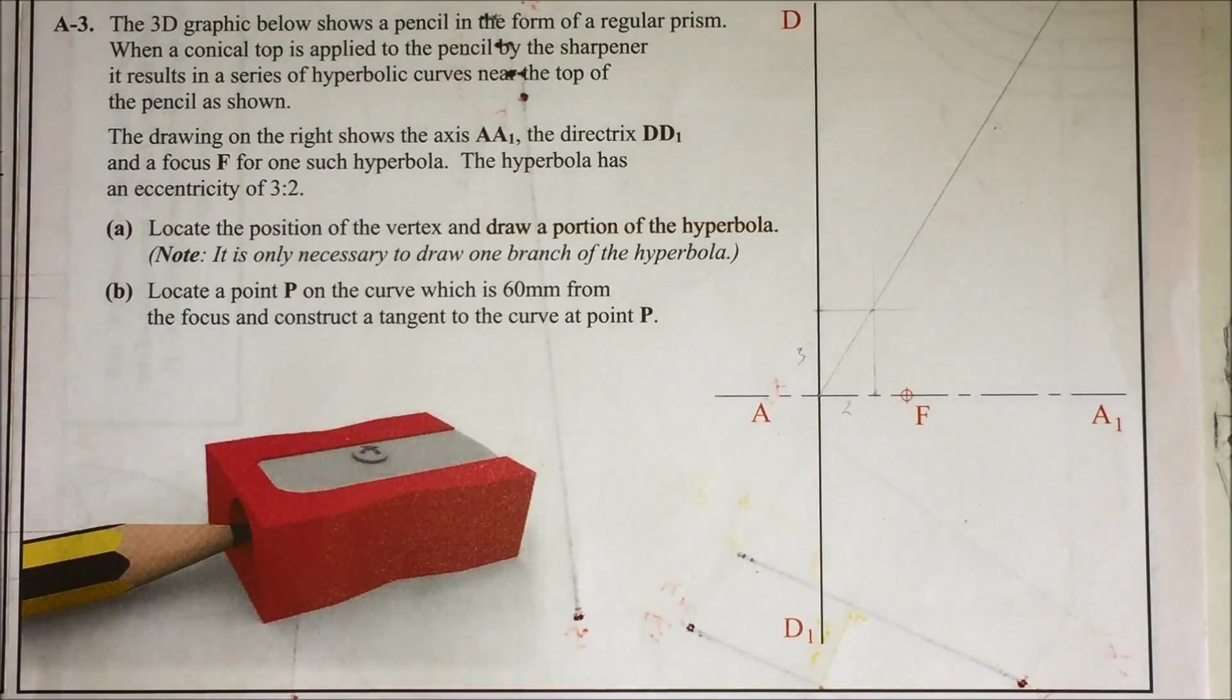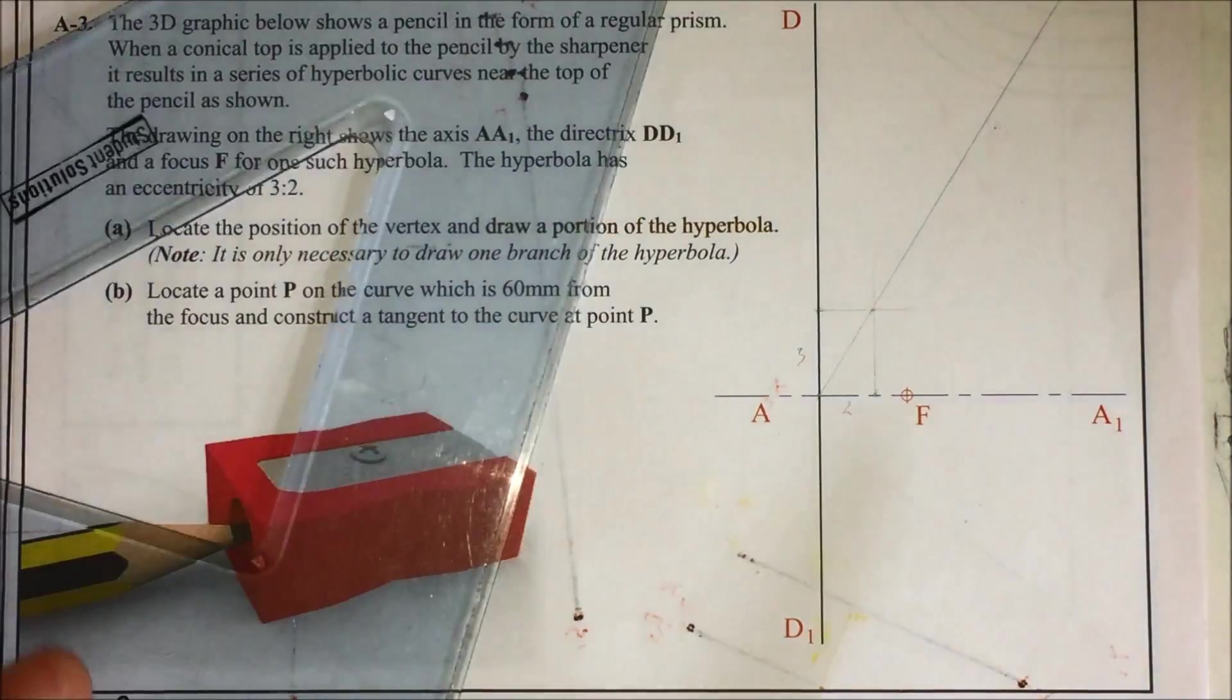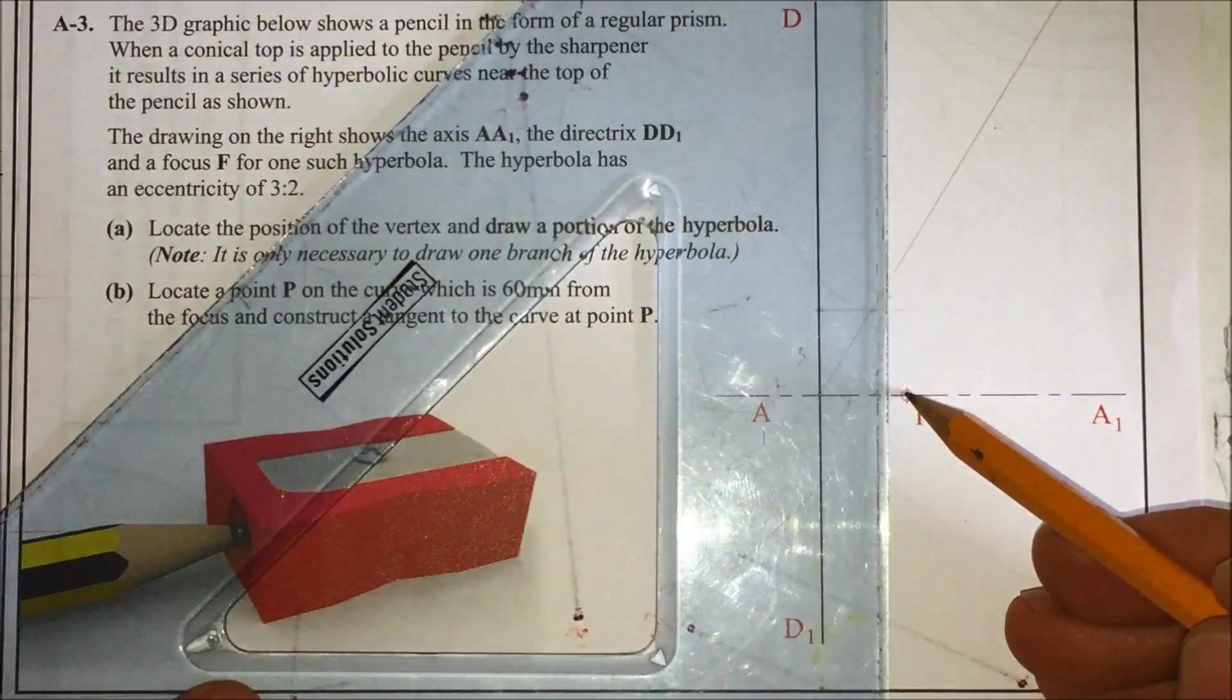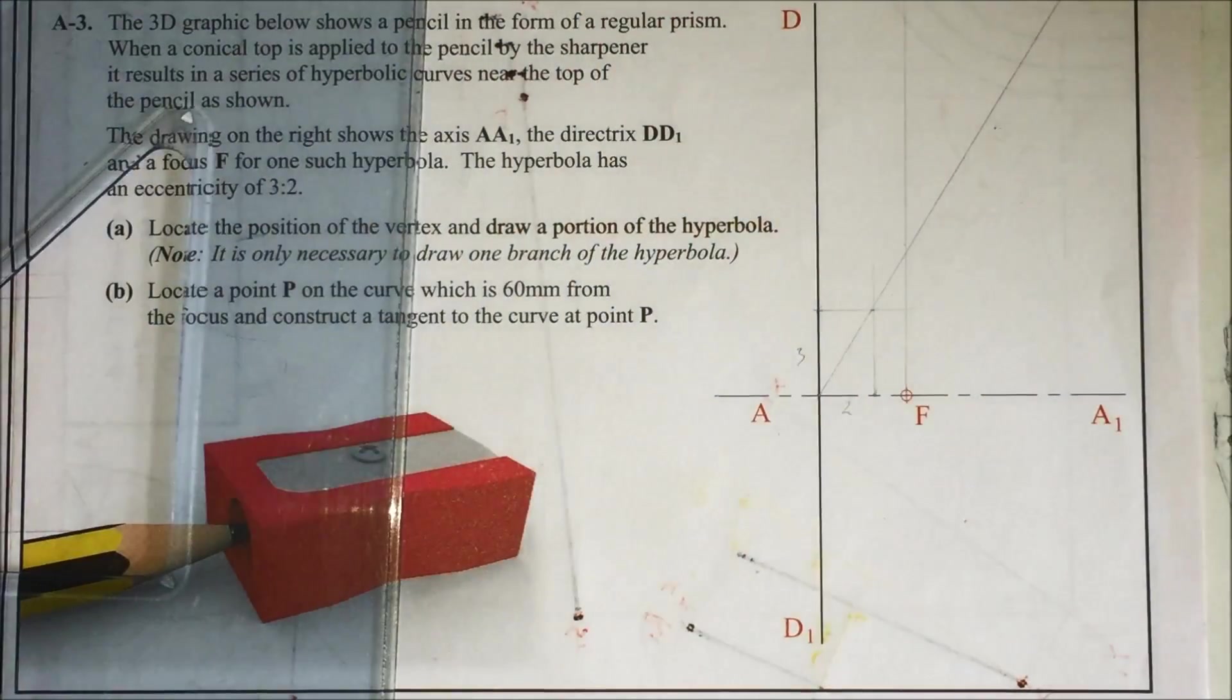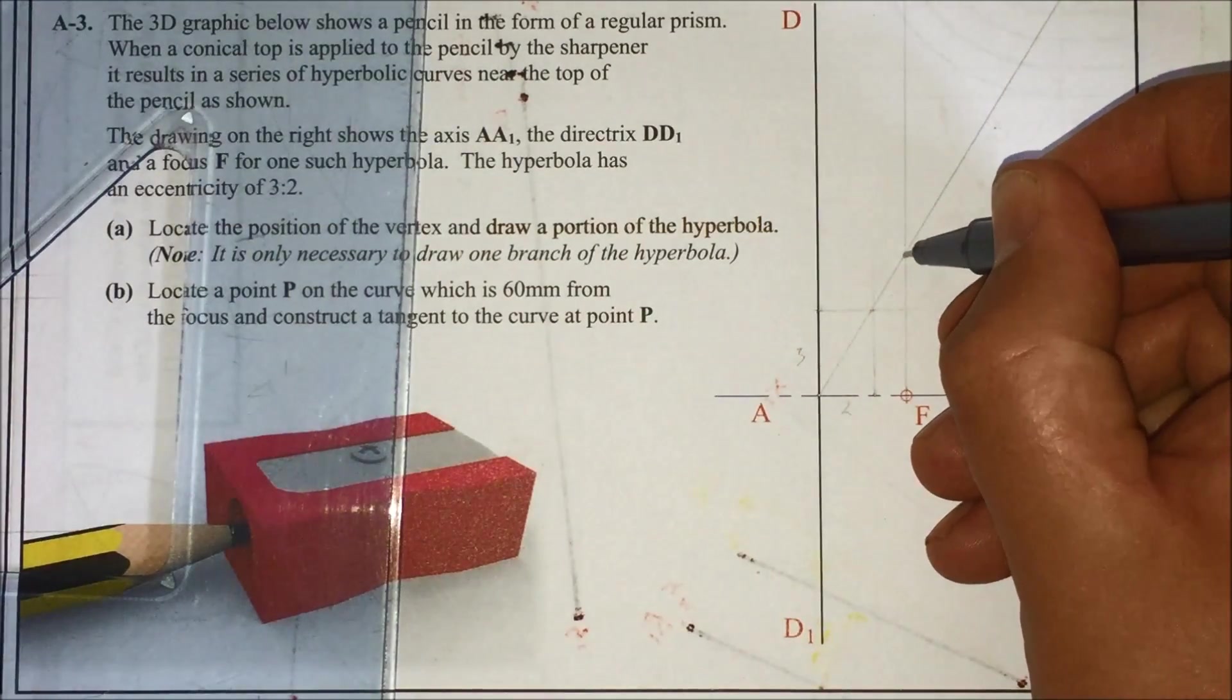Next thing we're going to do is draw a portion of the curve. So we need the vertex. If we bring your focus point, we need a line from the focus point straight up. Where it hits the line of interest A1 is going to give you a point on the curve. So this is going to be a point on the hyperbola already.